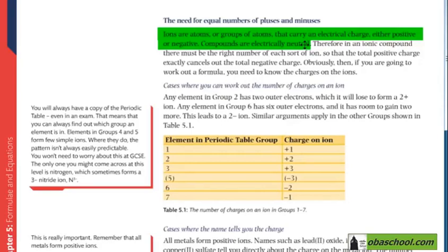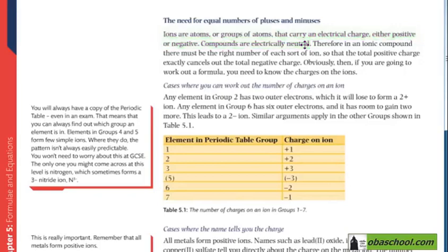Compounds are electrically neutral, and this is why the need for equal numbers of pluses and minuses is important. We will learn about cases where you can work out the number of charges on an ion.